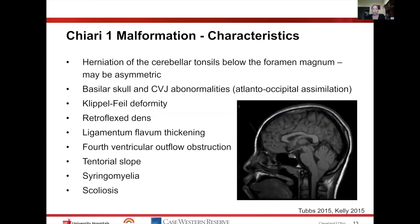The Chiari 1 malformation is characterized by herniation of the cerebellar tonsils below the foramen magnum. It doesn't have to be completely symmetric — oftentimes patients will have some asymmetry with one tonsil herniated a little more. These can also be associated with skull base and craniovertebral junction abnormalities, such as atlantooccipital assimilation — fusion of C1 to the skull base — and Klippel-Feil deformity with abnormalities in the bony elements of the cervical spine.